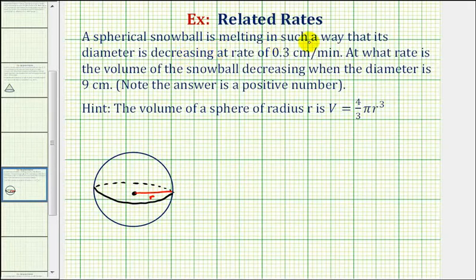A spherical snowball is melting in such a way that its diameter is decreasing at a rate of 0.3 centimeters per minute. At what rate is the volume of the snowball decreasing when the diameter is nine centimeters?